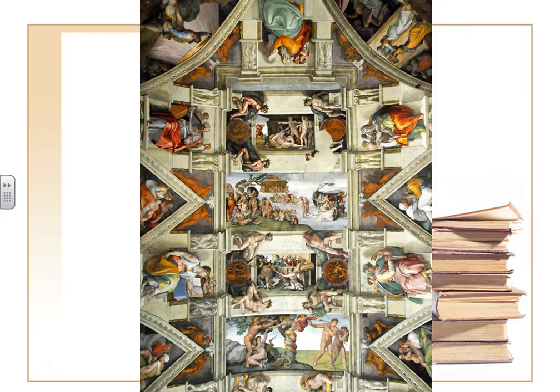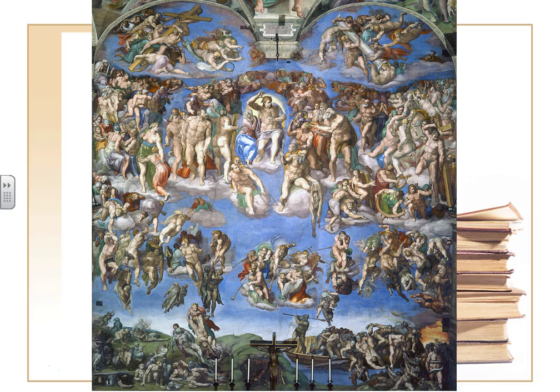About 30 years later, after Rome had been destroyed, Michelangelo was invited back to complete the Sistine Chapel by painting the wall. By this time his artistic style had evolved, and the Renaissance had officially ended. We're moving into an era known as mannerism.